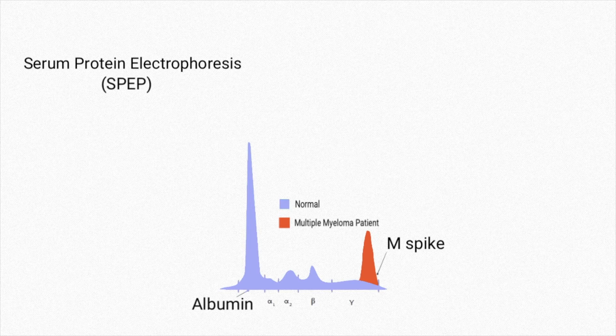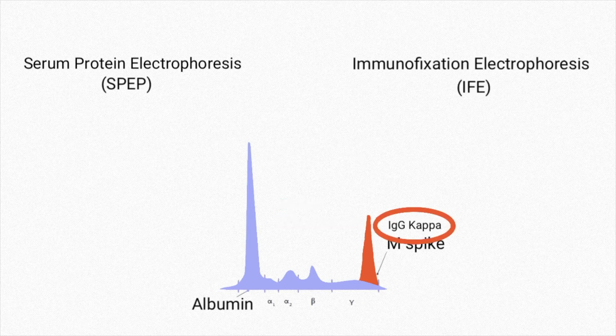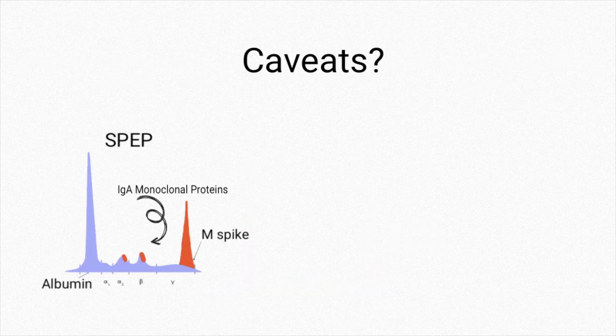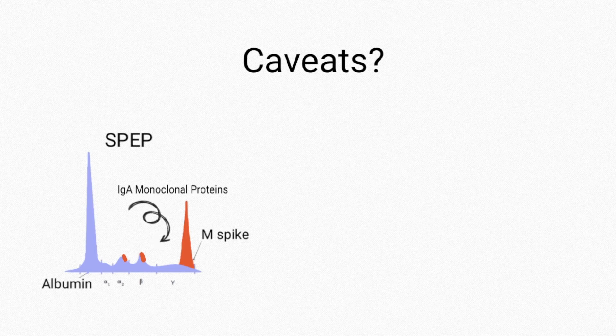Immunofixation electrophoresis, or IFE, tells us the type of M-spike that is produced in the blood. However, there are some caveats. IgA M-spikes might get stuck with alpha or beta proteins, so on SPEP, the value of an IgA M-spike might not be correct.